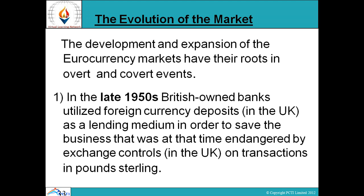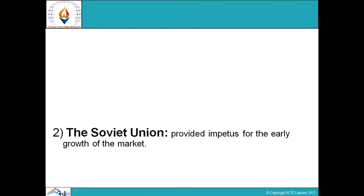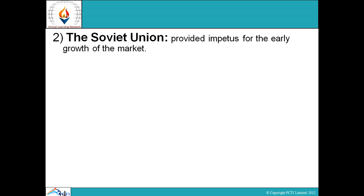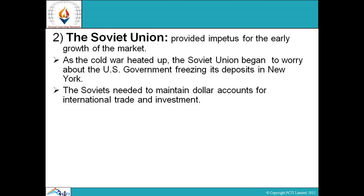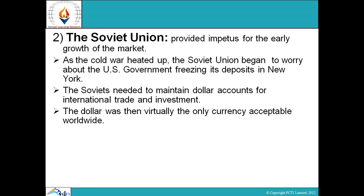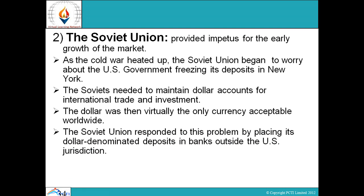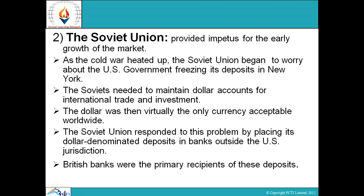Evolution of the market: the development and expansion of euro currency markets have their roots in overt and covert events in the late 1950s. British Old Bank utilized foreign currency deposits in the UK as a lending medium to save business that was endangered by exchange controls on transactions in pounds sterling. The Soviet Union provided impetus for early growth — as the Cold War heated up, the Soviet Union began to worry about the US government freezing its deposits in New York. The Soviets needed to maintain dollar accounts for international trade and investment, and responded by placing dollar denominated deposits in banks outside US jurisdiction — British banks were the primary recipients.